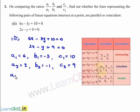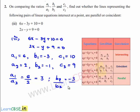So a1 by a2 is equal to 6 divided by 2, which is nothing but 3. In the similar manner, b1 by b2 is equal to minus 3 divided by minus 1, which is nothing but 3. And c1 divided by c2 is equal to 10 divided by 9.